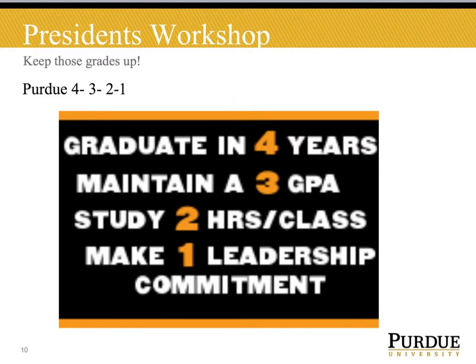This is Purdue's 4-3-2-1 model — a great model to share with your executive board and general members. Purdue's 4-3-2-1 model states that Boilermakers should graduate in four years, maintain a 3.0 GPA, study two hours for every hour in class, and make one leadership commitment each semester.